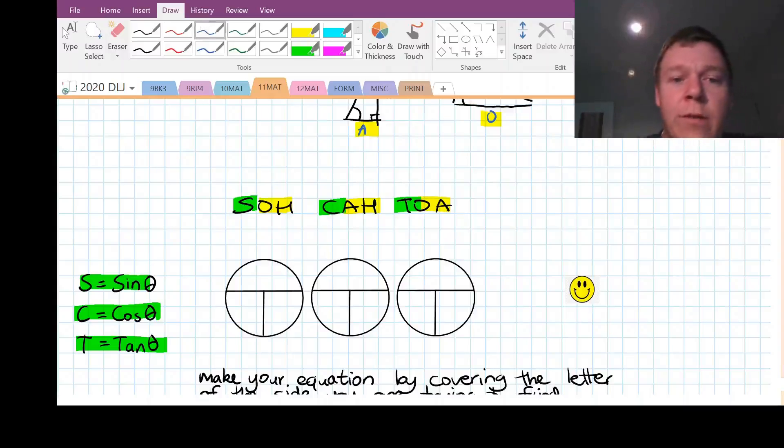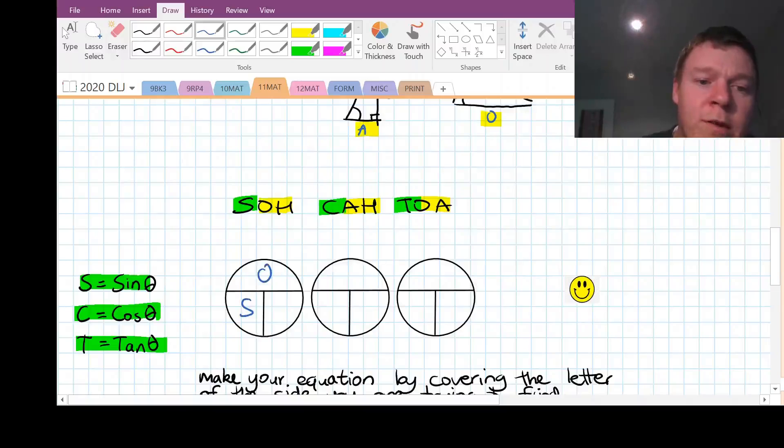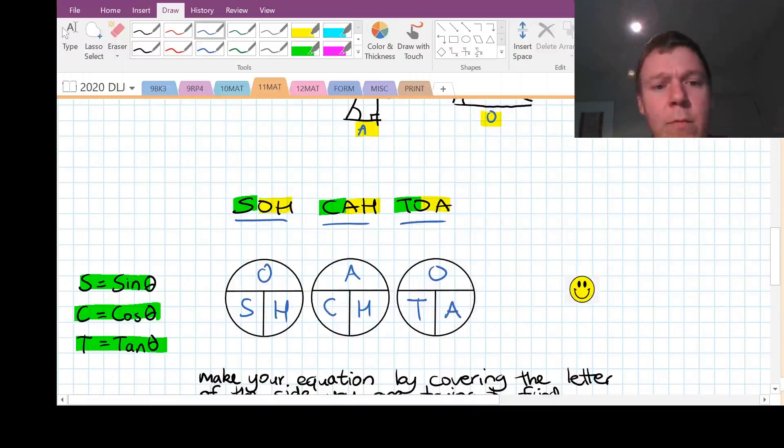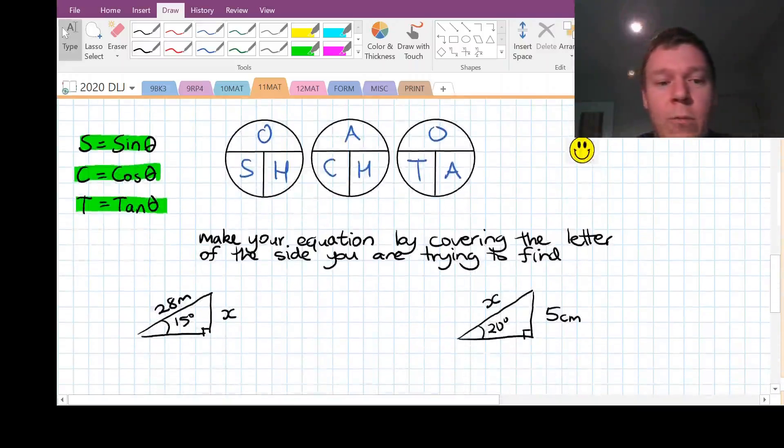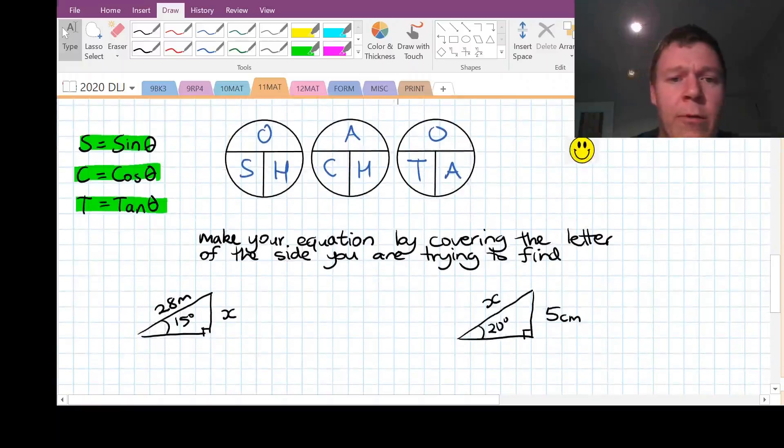So if you remember SOHCAHTOA, then you can put SOHCAHTOA into these circles, like this. So the middle letter always goes up the top. S-O-H for the SOH. SOHCAHTOA, C-A-H for the CAH, and T-O-A for the TOA. All right. So that's how SOHCAHTOA mnemonic works.